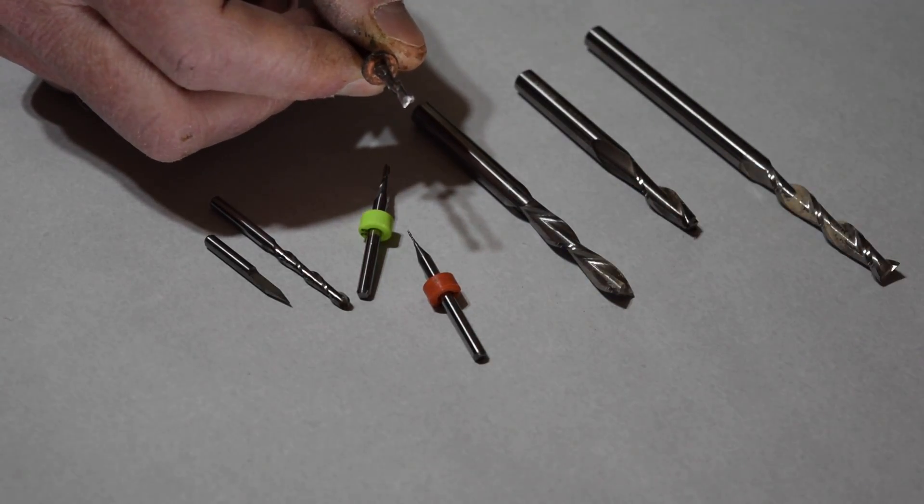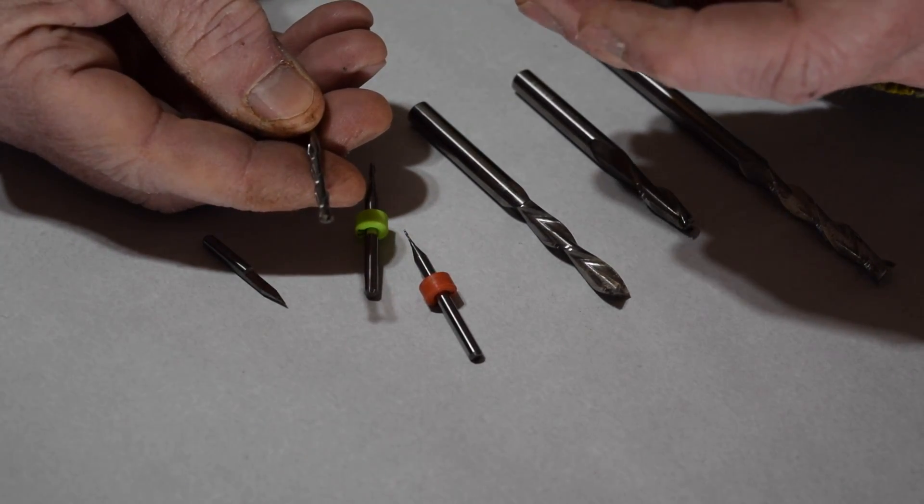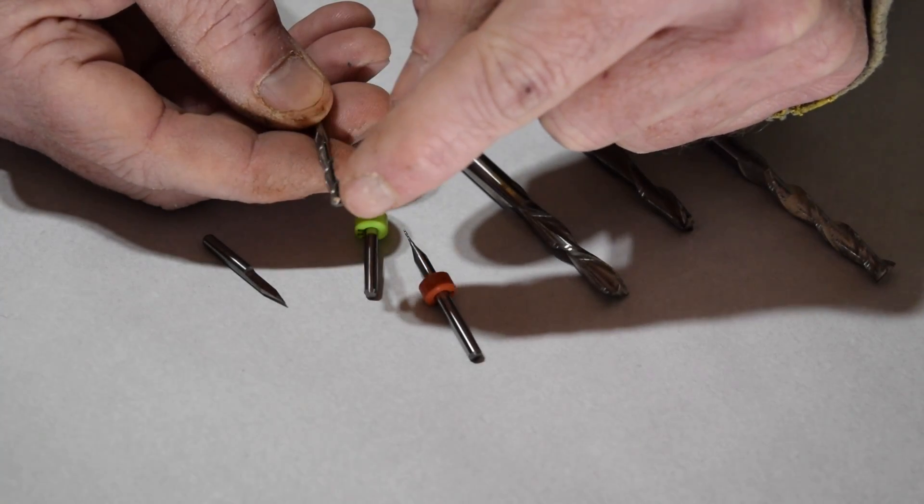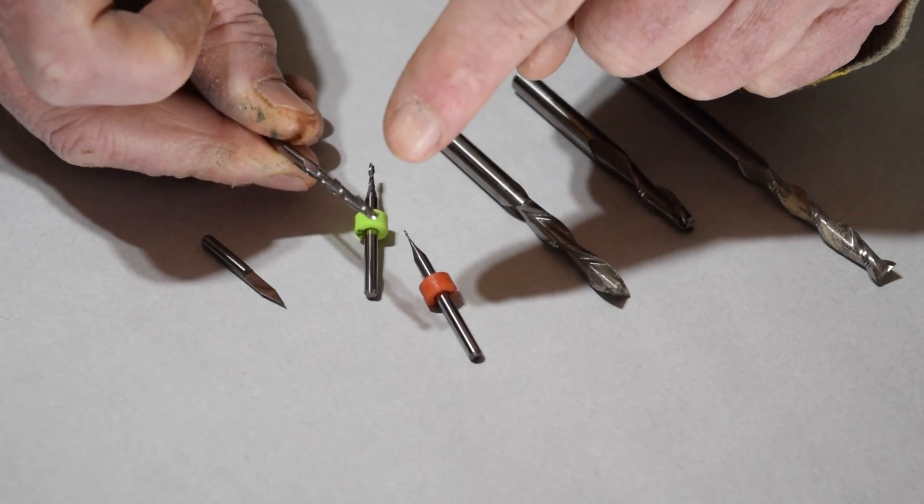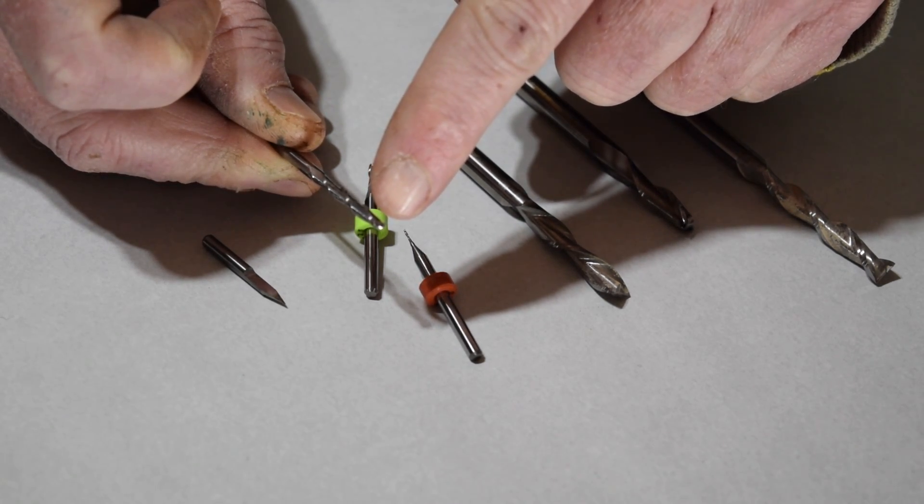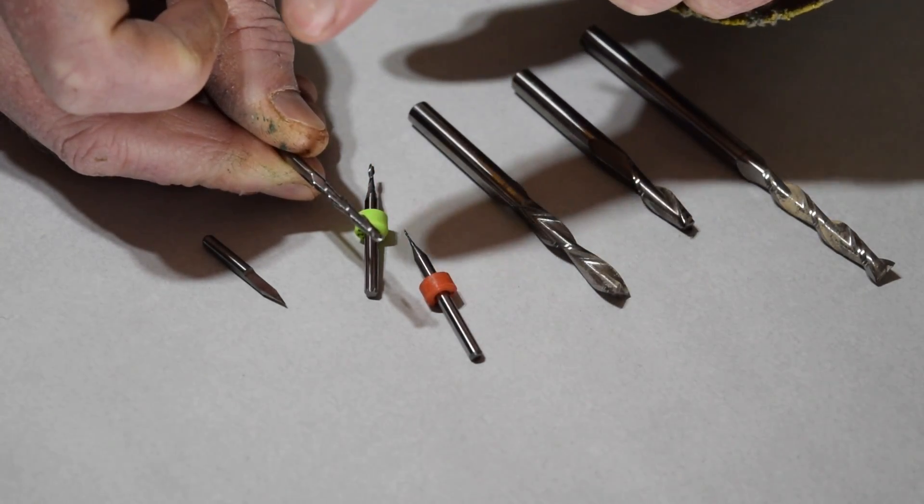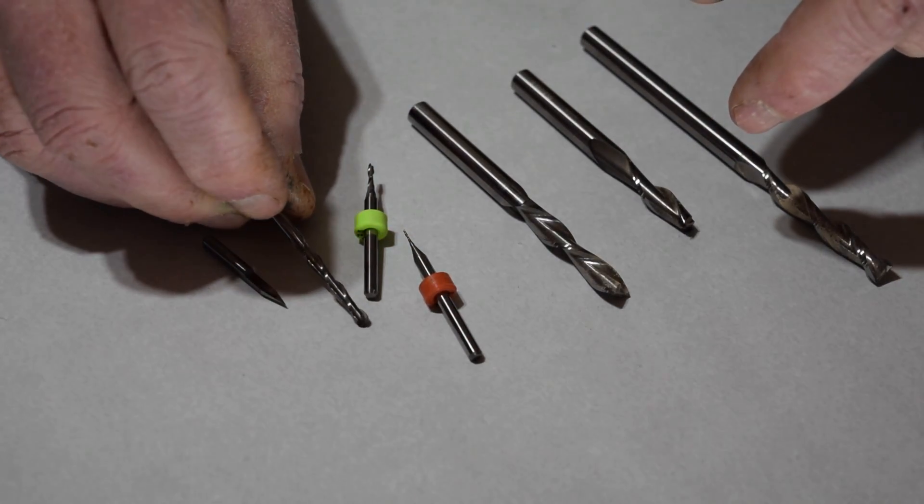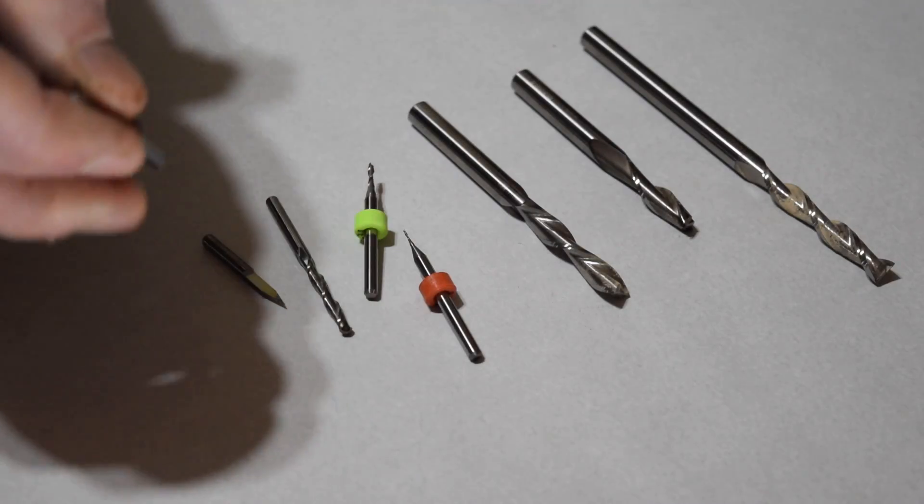In fact all these bits have flat ends with the exception of this one. This is an eighth inch spiral upcut bit but it has a rounded what they call a ball end. And I use this bit for cutting a fretboard radius because with the right settings on the finishing pass this bit will leave a nice smooth perfectly radiused fretboard. And all I have to do is just give it a light rub down with some fine grit sandpaper to remove any residual tool marks that can be left over.